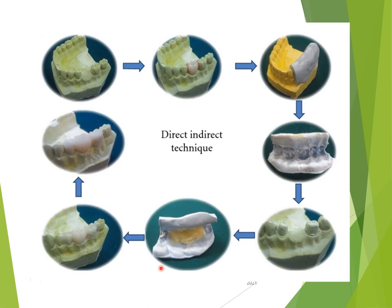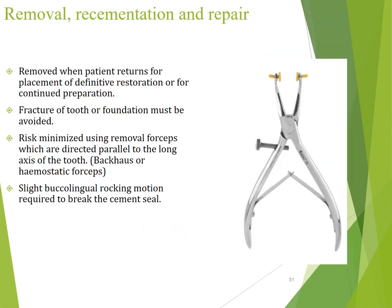In this technique, after getting the putty index of the prepared teeth, you can load the temporary material and place it directly in the patient's mouth, get a provisional restoration, take it out, trim it off, then place luting cement and place it back in the patient's mouth.